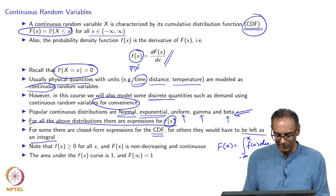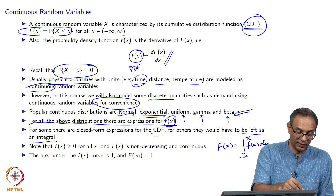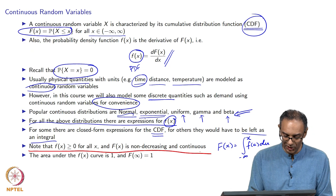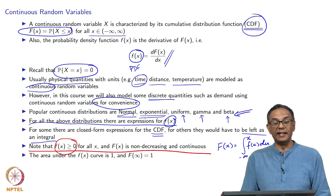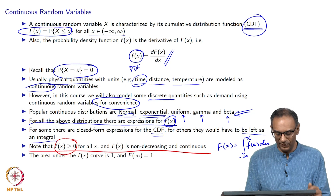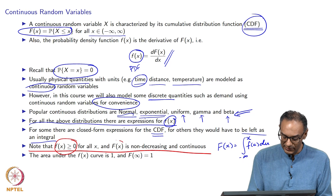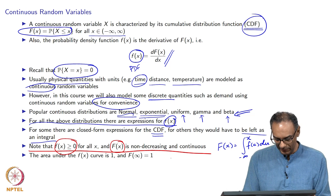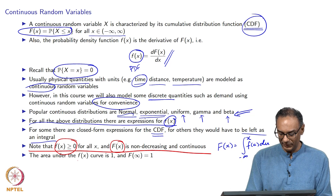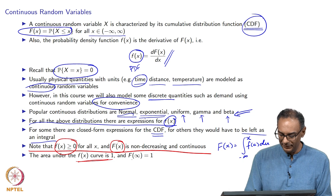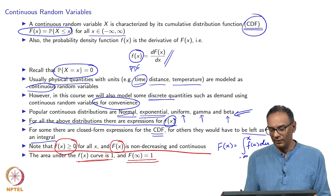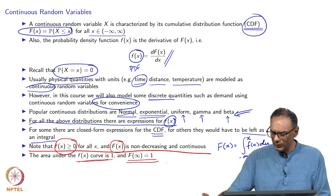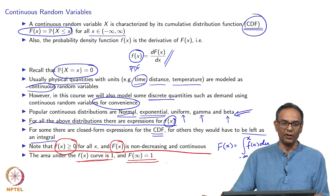Looking at an example will make this clearer. There are two crucial properties to emphasize: first, the probability density function f(x) is always greater than or equal to 0 for every value of x; and second, the CDF F(x) is non-decreasing and continuous. The area under the f(x) curve equals 1, which means the value of the CDF at infinity equals 1.